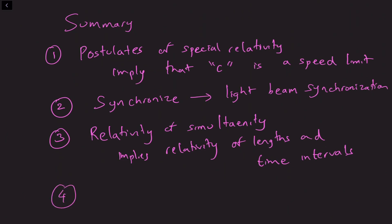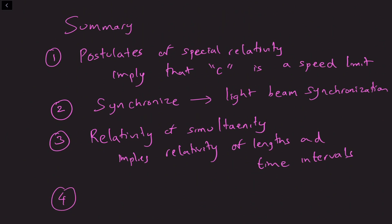And finally, using the postulates of special relativity we formally derived the dictionary of special relativity. So we are now able to translate observations as seen by one observer into the language or the coordinates as described by a second observer.